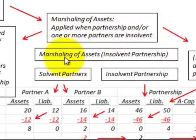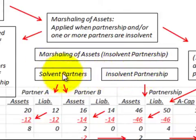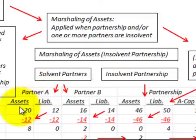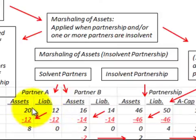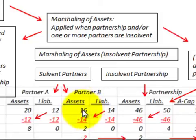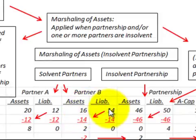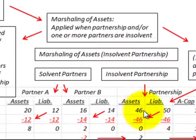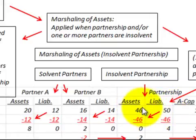In this example, we're going to have solvent partners but an insolvent partnership. Partner A has assets of $20,000 and liabilities of $12,000, so they're solvent — greater assets than liabilities. Partner B has assets of $16,000 and liabilities of $14,000, so they're also solvent. But the partnership has assets of $46,000 and liabilities of $50,000, making it insolvent because liabilities exceed assets.